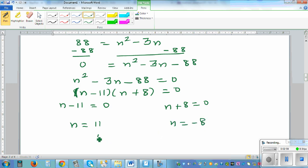But n has to be greater than 0. The number of sides cannot be negative, so you have an 11-sided polygon.